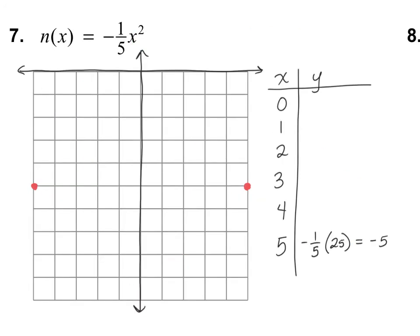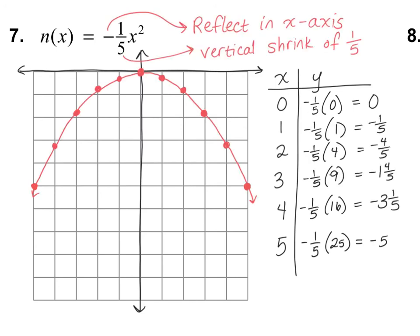For number 7, I already started it — when you plug in positive 5, you get negative 5. Please finish this problem. The final answer: there's a negative out front, so it's a reflection in the x-axis, and we're multiplying by one-fifth, so it's a vertical shrink of one-fifth. Thank you very much for watching. Have a great day.